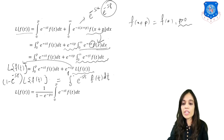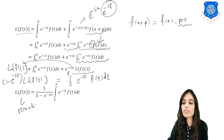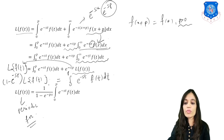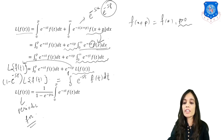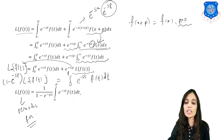We take the e raised to minus sp times Laplace of f(t) term to the left side and factor out Laplace of f(t). What remains is (1 minus e raised to minus sp) times Laplace of f(t) equals the integral from 0 to p of e raised to minus st times f(t) dt. Finally, the formula is: Laplace of f(t) equals 1 upon (1 minus e raised to minus sp) times the integral from 0 to p of e raised to minus st times f(t) dt.